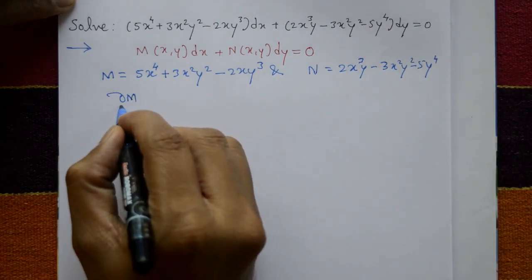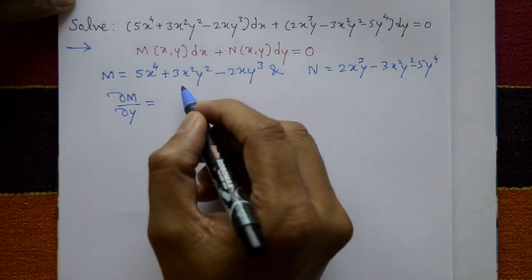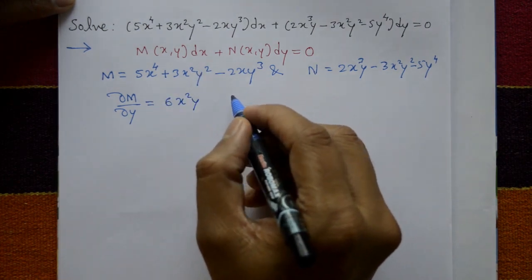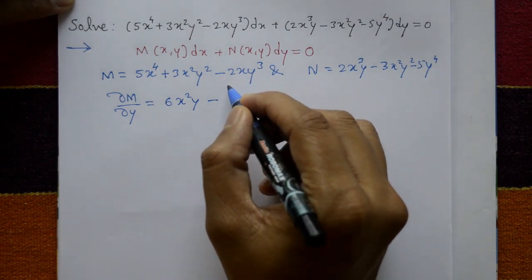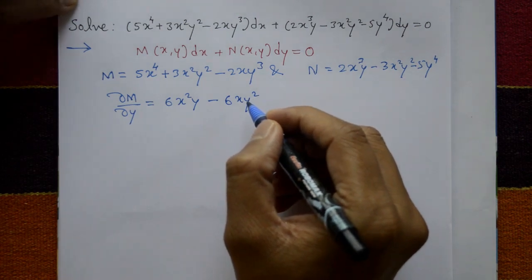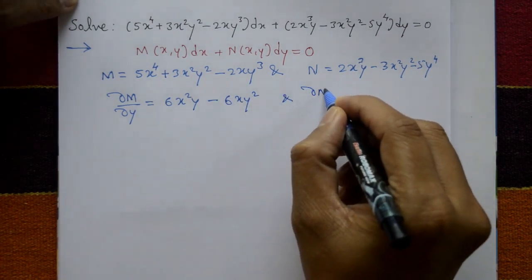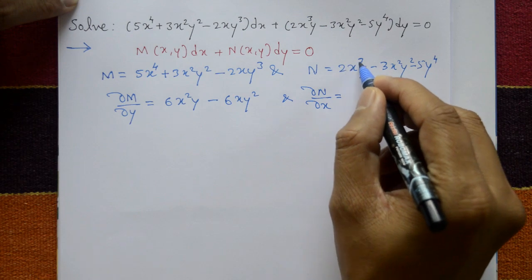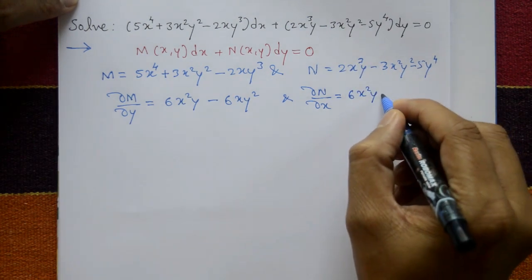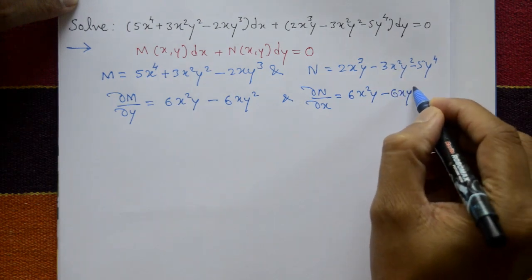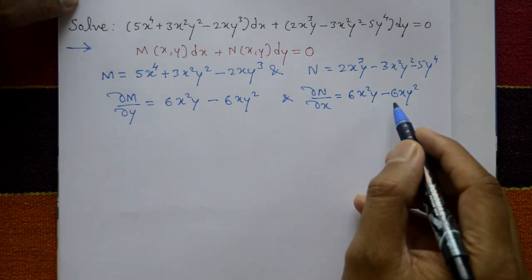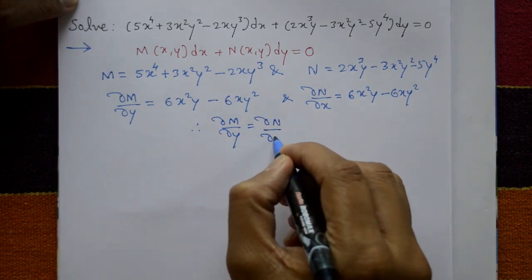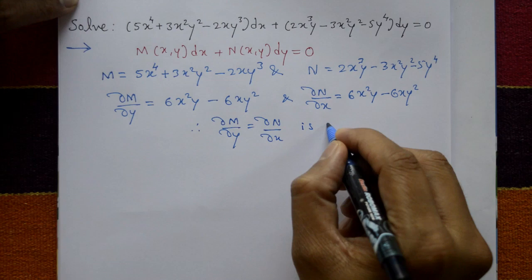Now differentiate M with respect to y partially, with x treated as a constant. That gives 6x²y - 6xy². Then differentiate N with respect to x partially, with y treated as a constant. Differentiating 2x³ gives 6x²y, and the next term gives -6xy². Since ∂M/∂y equals ∂N/∂x, both are the same, meaning the given equation is exact.